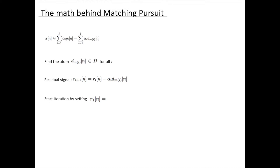We start the iteration by setting the residual equal to the input signal. The alpha value is found by the inner product of g i and r i. This is possible when we assume atoms in the dictionary are restricted to unit norm.